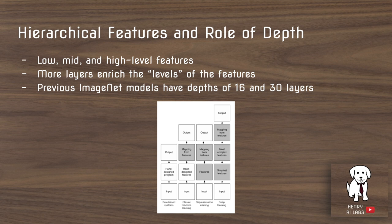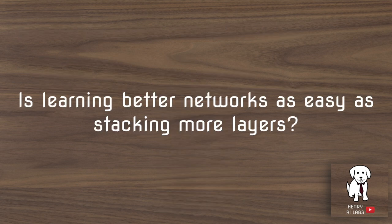Deep learning is thought of as learning a hierarchical set of representations, such that it learns low, mid, and high level features. In images, this is analogous to learning edges, then shapes, then objects. So theoretically, more layers should enrich the levels of the features, and previous models to the ResNet typically have depths of 16 and 30 layers. So the idea is: shouldn't building better neural networks be as easy as adding more layers to the network?